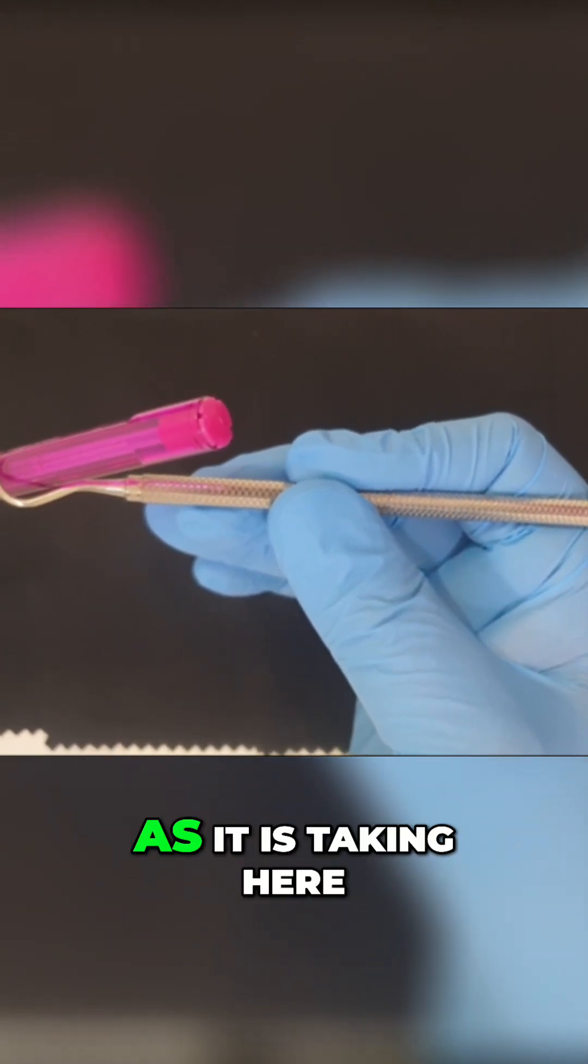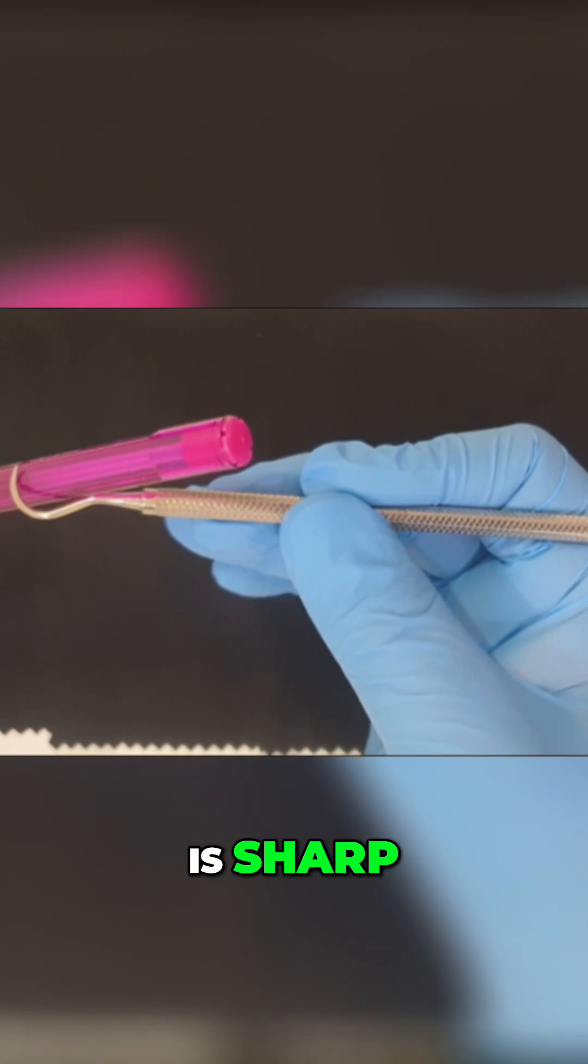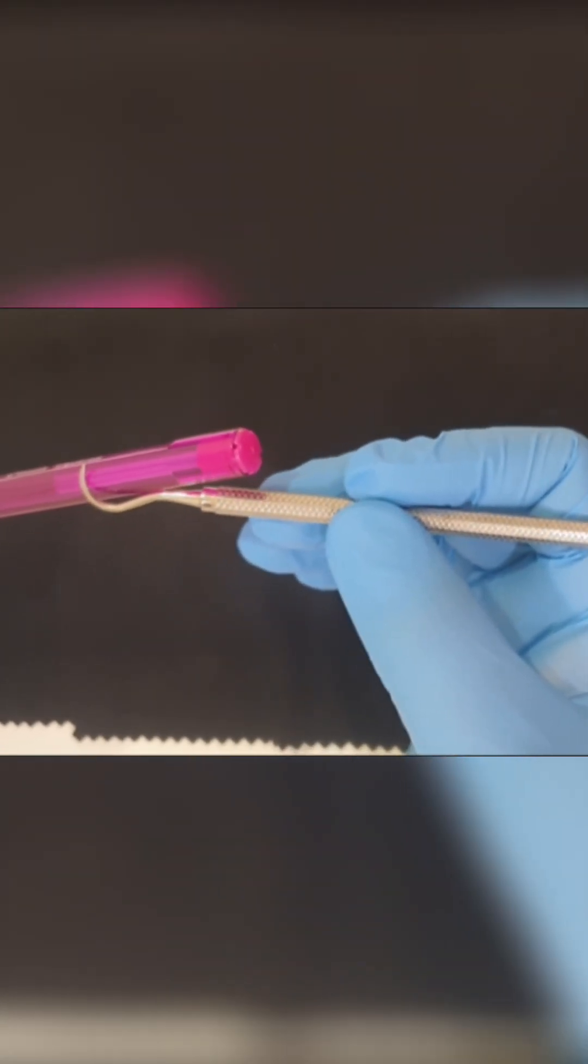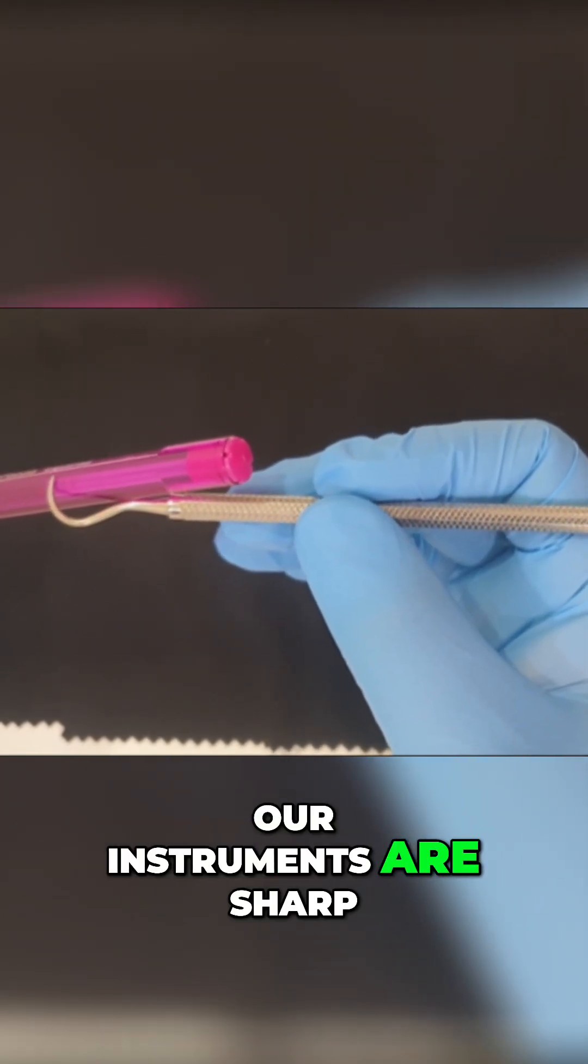I will try to slide the instrument over the acrylic stick. If it takes a bite, as it is taking here, that means my instrument is sharp. If my instrument is not sharp, it will just slide on the acrylic stick. That is one way of making sure that our instruments are sharp.